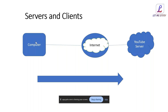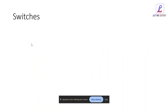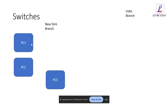Once the second switch is connected to the main switch, it becomes part of the same network. Any packet from PC1 will be broadcast to PC2, PC3, and also to the second switch — because a switch's default behavior is to broadcast whatever packet it receives.